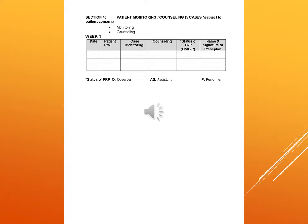Section 4 includes patient monitoring and counselling, with at least 5 cases. Monitoring and counselling are mentioned separately in the chart. The chart includes date, patient registration number, cases for monitoring, counselling, status of PRP, and name and signature of the preceptor. The same method is followed in week 2.